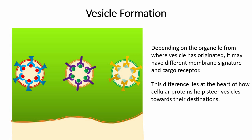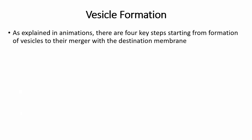Although we have summarized the steps of formation of clathrin coated vesicles here, broader details of how COP1 and COP2 vesicles are formed are also similar. As explained in animations, there are four key steps starting from formation of vesicle to their merger with the destination membrane.